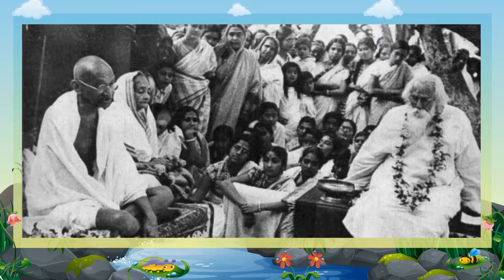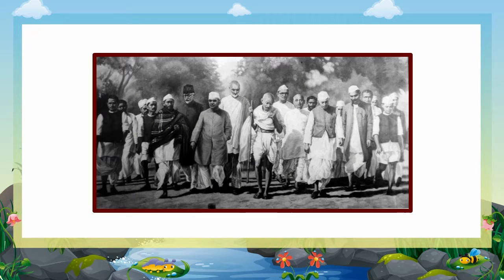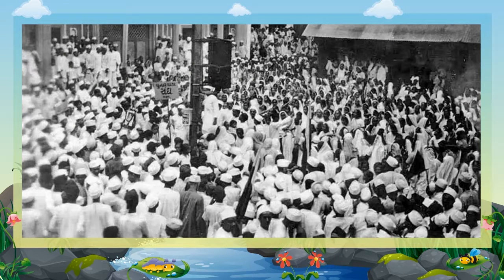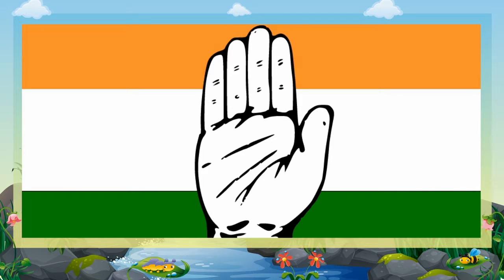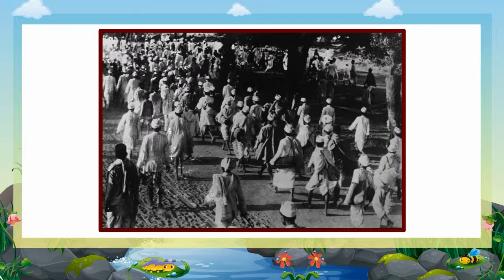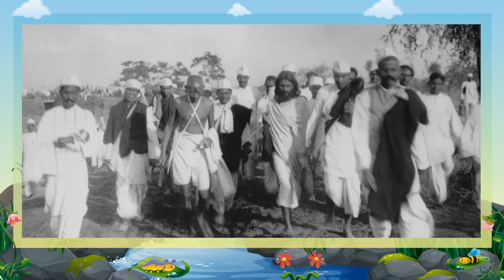Quit India Movement: The Quit India Movement, Bharat Chhodo Andolan, or the August Movement, was a civil disobedience movement launched in India in August 1942 in response to Gandhi ji's call for immediate independence. Gandhi hoped to bring the British government to the negotiating table. The Indian people now wanted complete independence and asked the British to leave India as early as possible. The Indian National Congress under Gandhi's leadership started the Quit India Movement in 1942. The British immediately arrested Gandhi and other leaders. Gandhi gave the slogan 'Do or Die' — either they get freedom or die for it.